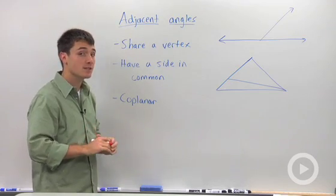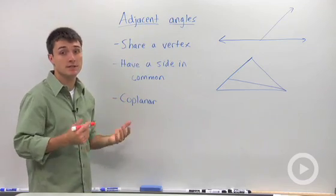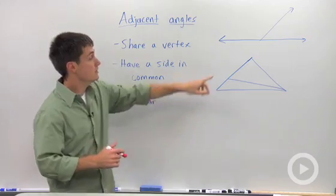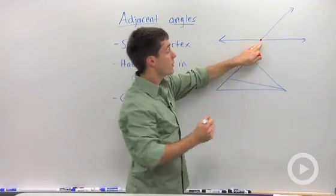We'll hold off on adjacent sides for trigonometry. But for now, the key part of an adjacent angle is that they share a vertex. Again, the vertex is this point right here. I'm going to draw a red dot. So this right here is a vertex.